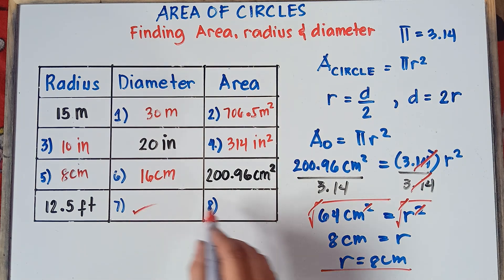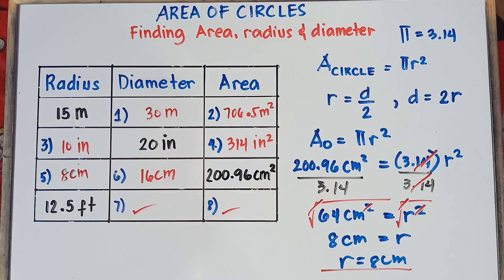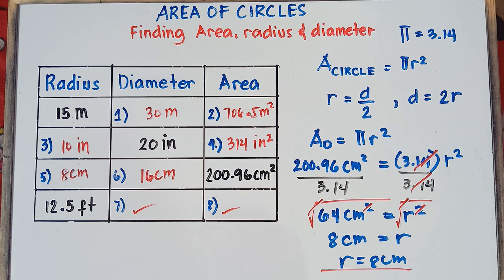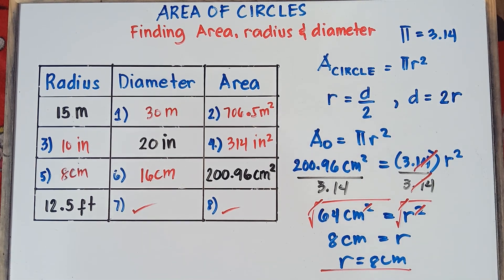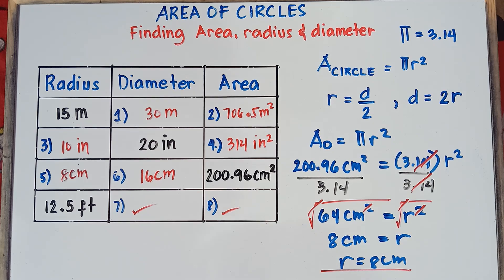How about you try number 7 and number 8: given the radius, find the diameter and the area. Put your answers in the comment section below, and I'll check if you really understand our topic. If you have questions about the area of circles, feel free to leave a comment. I hope you learned something new today. If you like this video, don't forget to like, share, and subscribe. Once again, this is Teacher MJ. Have a great day, class. Goodbye for now.